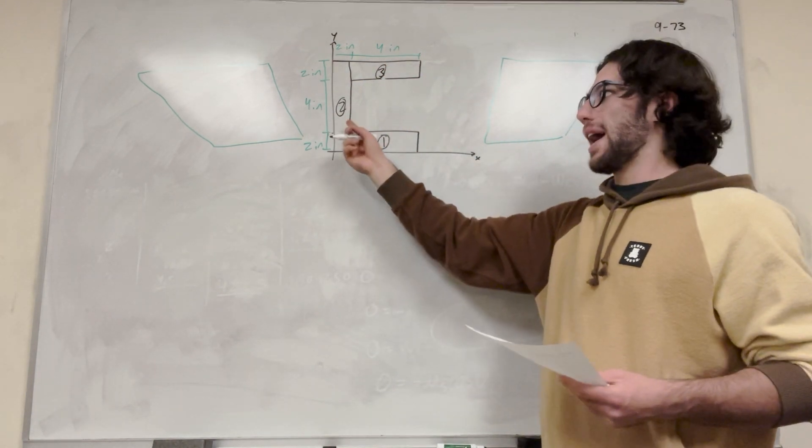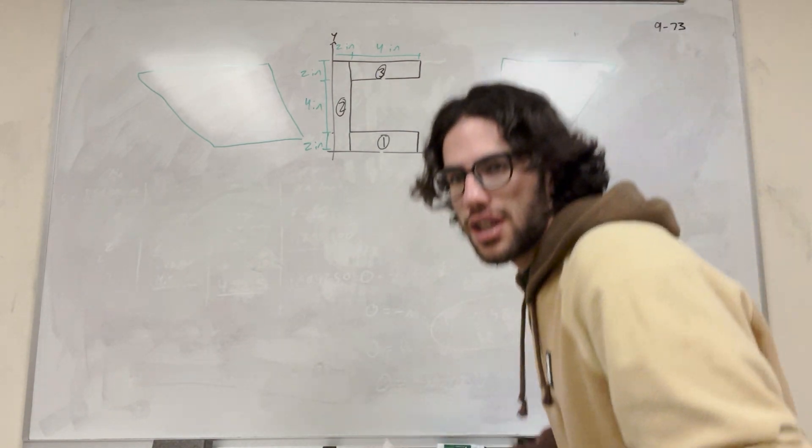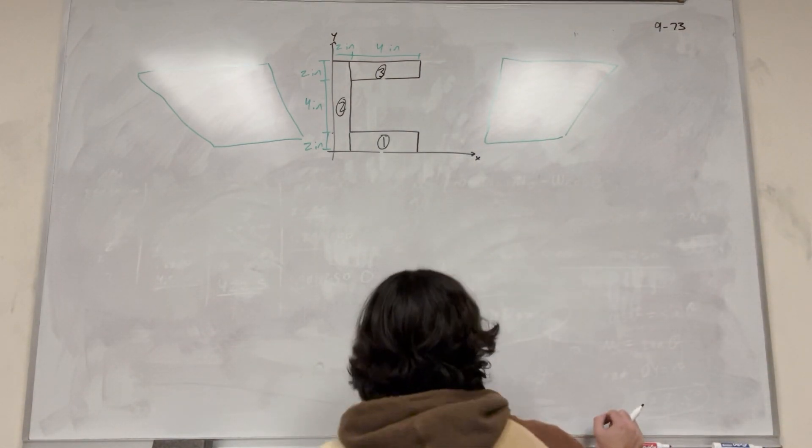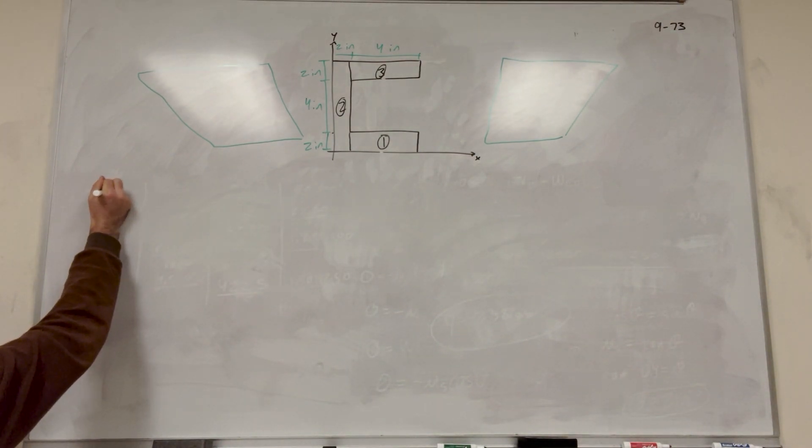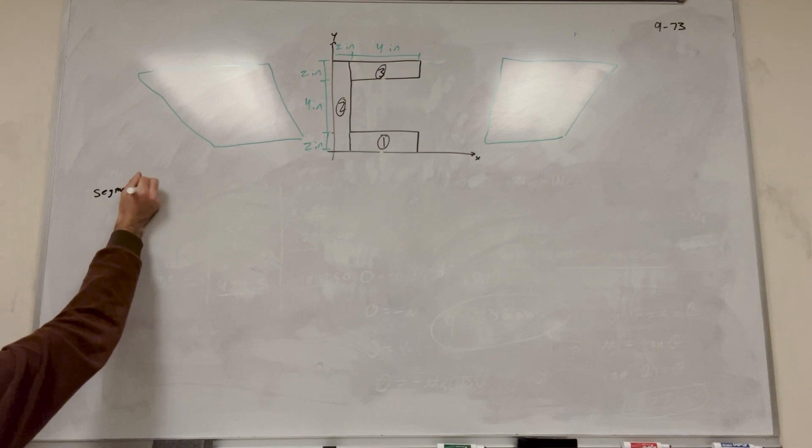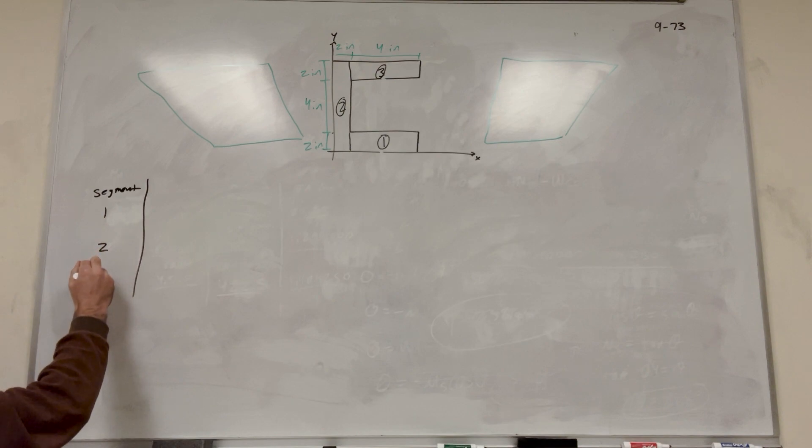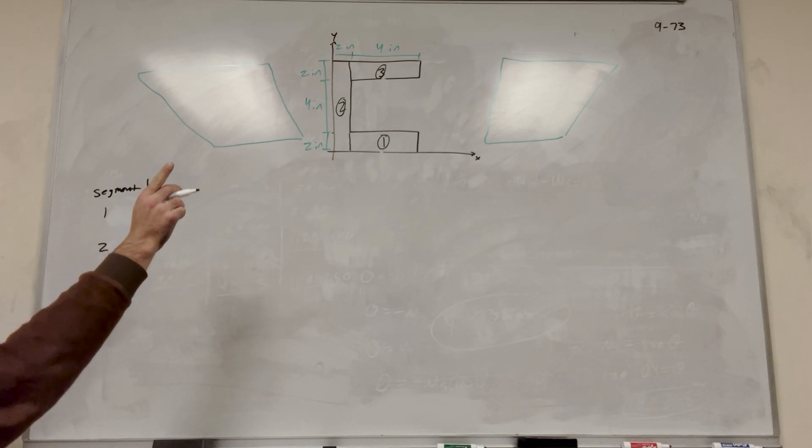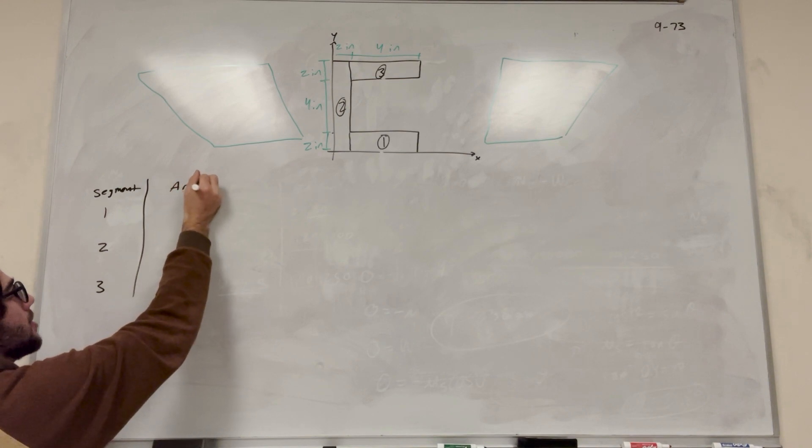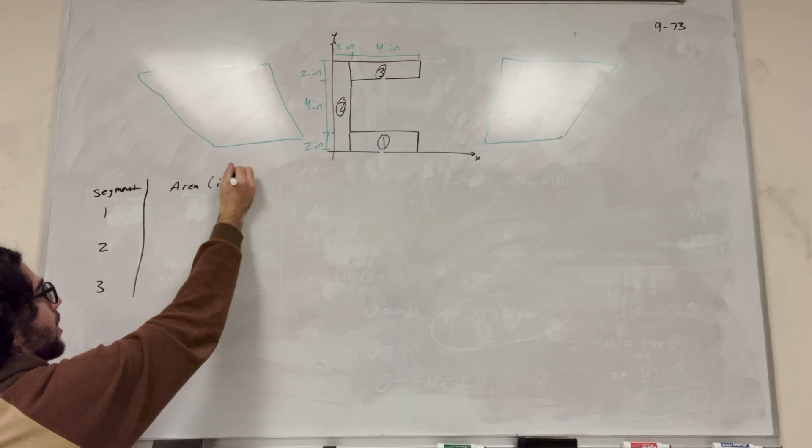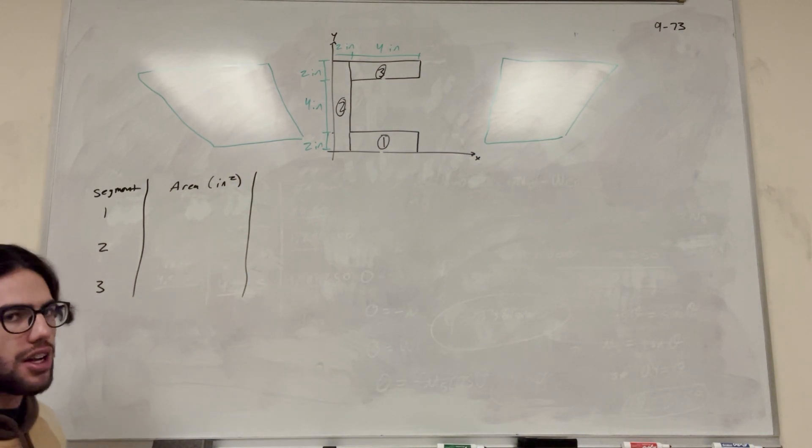So it's going to be really easy to find the center of masses of these shapes and the areas of these shapes, and then we can just use an equation to put it all back together at the end. So when we're doing this stuff, we want to make a table first. So the table is going to look like this segment. So the segment is going to be which one we're doing. So we have one, two, and three, because we have the three segments there. So our next part is going to be area.